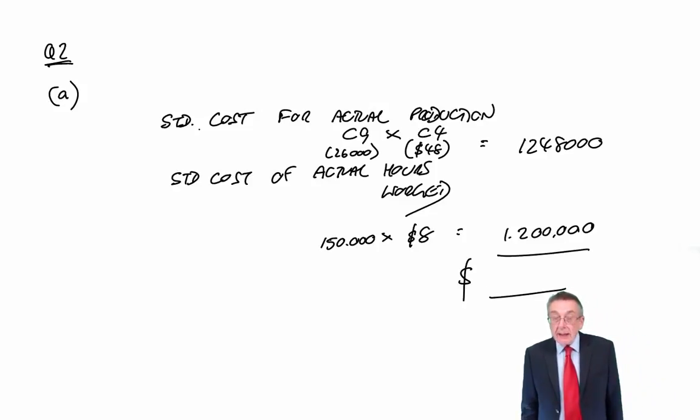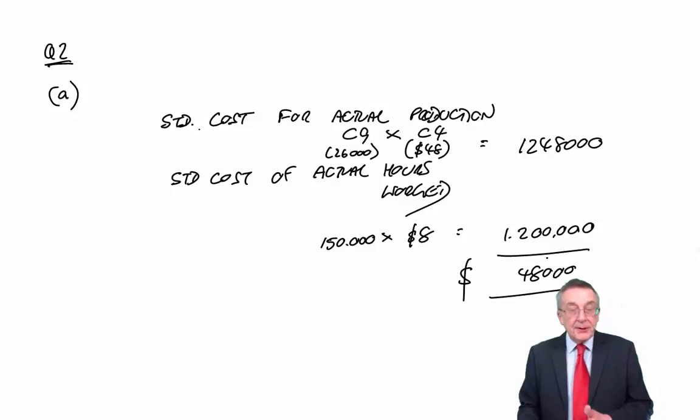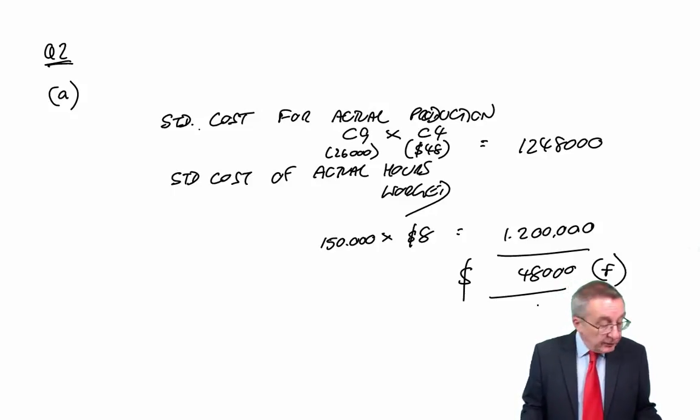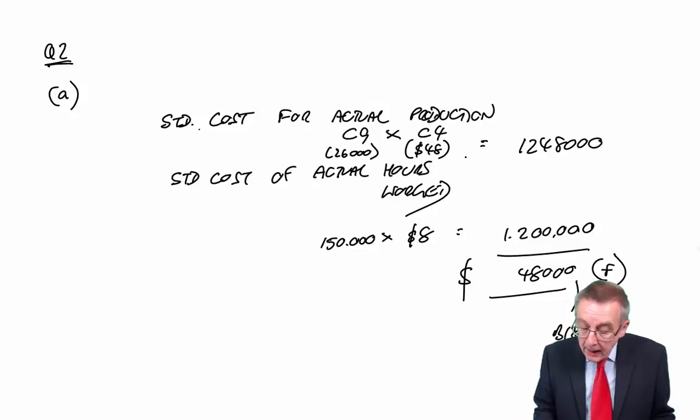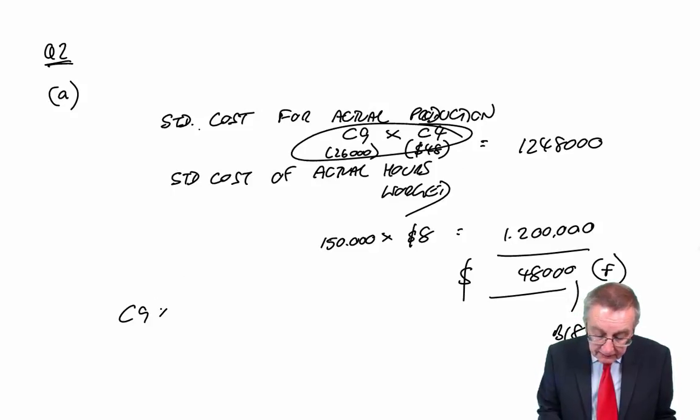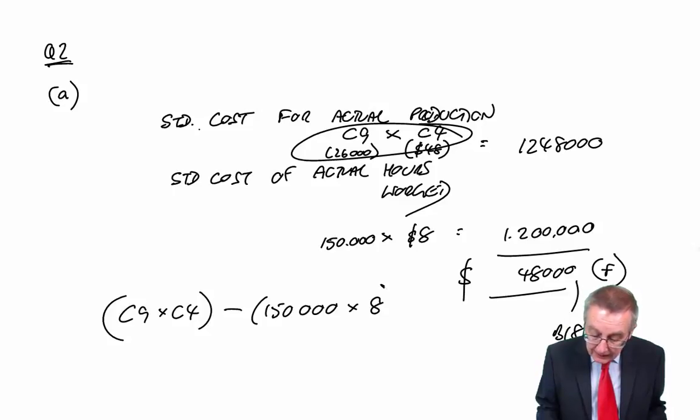Although I did say don't waste time doing the arithmetic, there's only two marks for this. But since we are here, I will check it. The difference is £48,000. We spent less than we would have expected. So it's favourable. And of course, that is what's in cell B18. So it's taken me much longer here than it would have done in the exam, because I'm trying to explain. But the formula, we took C9 times C4, we subtracted 150,000 times 8. And so, which of those is it? It's C. Answer C.